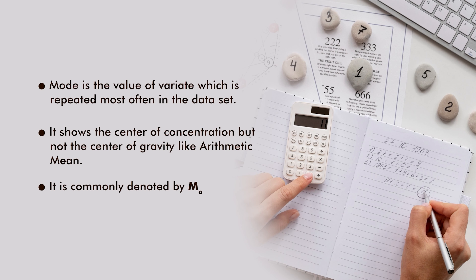Mode is commonly denoted by lowercase 'mo' or sometimes by 'z'. Mode is not the center of gravity like arithmetic mean because arithmetic mean takes into account all the data for calculation, whereas mode is the value of variate which is repeated most often.